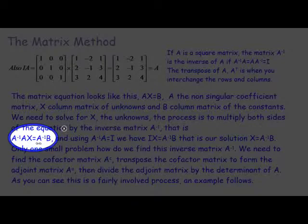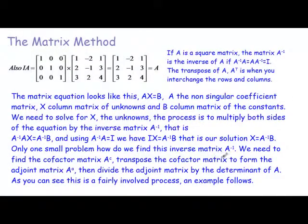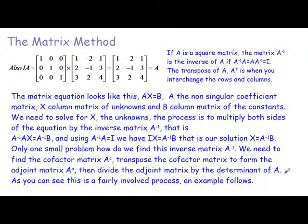That sounds simple, but we need to find this inverse matrix A⁻¹. Here's how: first, find what's called the cofactor matrix, called A^C. Then transpose the cofactor matrix to form the adjoint matrix, A^adj. Then divide the adjoint matrix by the determinant of A. So we need to find the determinant of A as well. It's fairly involved, but let's go through an example.